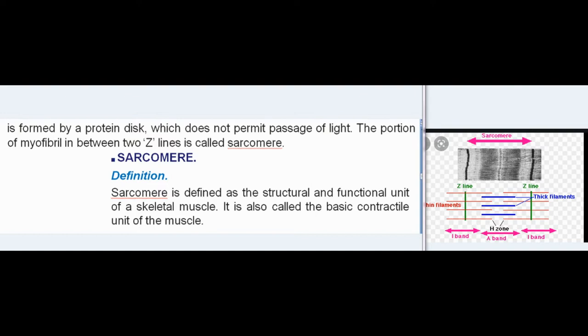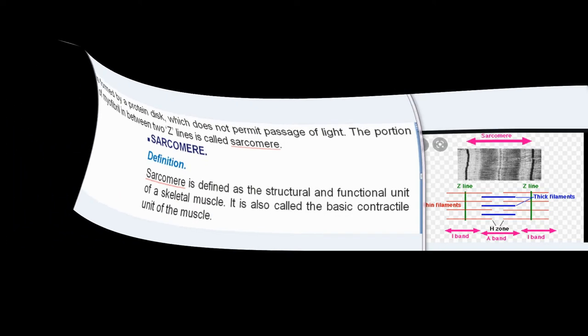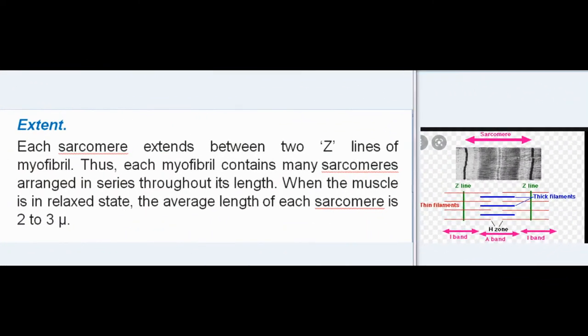Sarcomere Definition: Sarcomere is defined as the structural and functional unit of a skeletal muscle. It is also called the basic contractile unit of the muscle. Extent: Each sarcomere extends between two Z-lines of myofibril. Thus, each myofibril contains many sarcomeres arranged in series throughout its length. When the muscle is in relaxed state, the average length of each sarcomere is 2 to 3 microns.